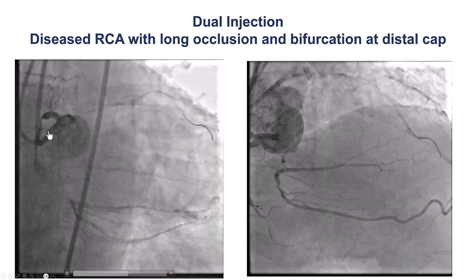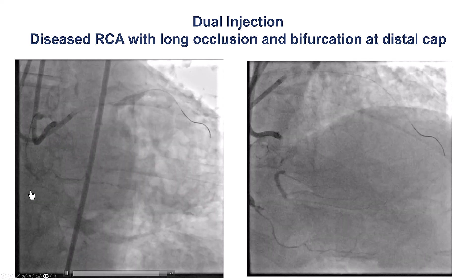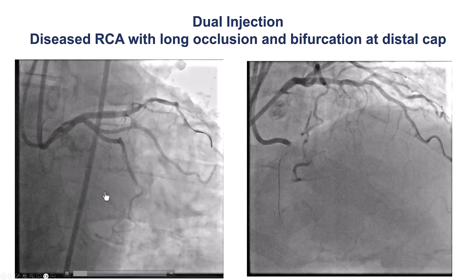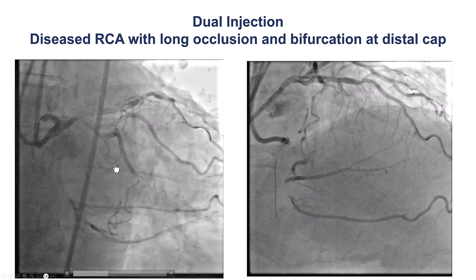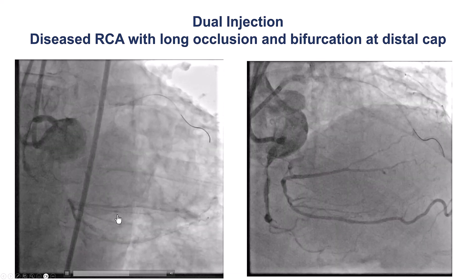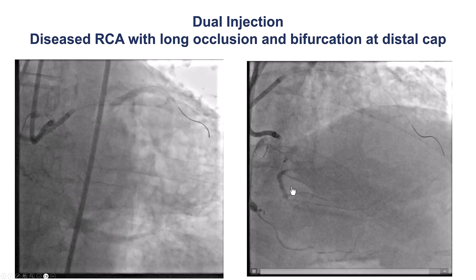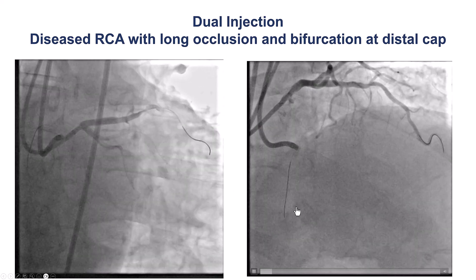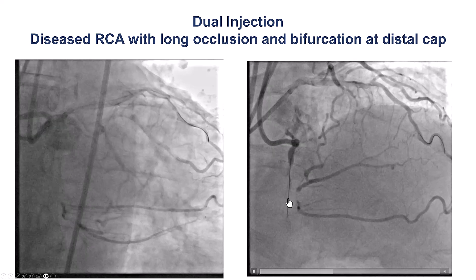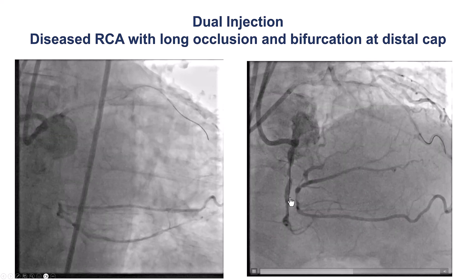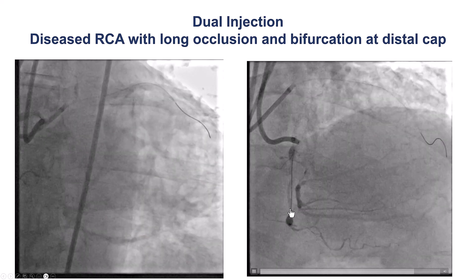The dual injection shows a CTO of the distal right coronary artery, with the right posterolateral and PDA filling mainly through an epicardial collateral from the circumflex. There is also a blunt occlusion of the distal cap, with bifurcation of the PDA and the right posterolateral.